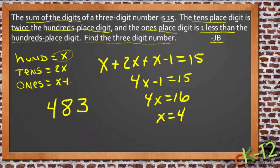And 8 plus 4 is 12, 12 plus 3 is 15. Yep, that works. So our three digit number then is 483. There you go, JB.